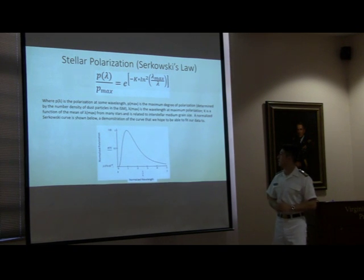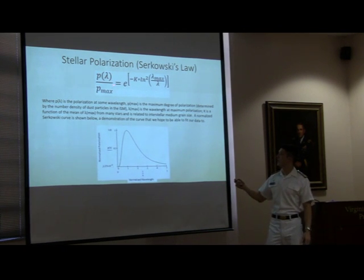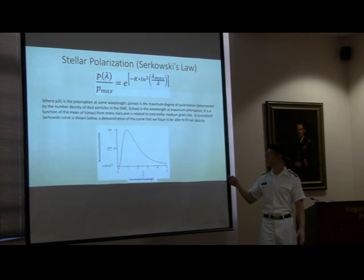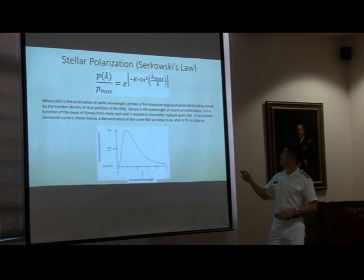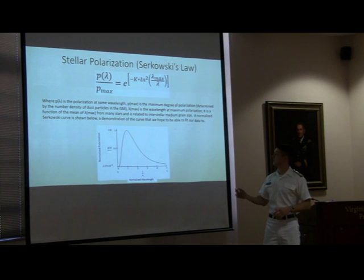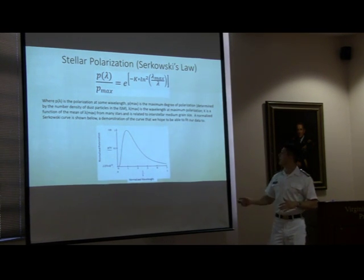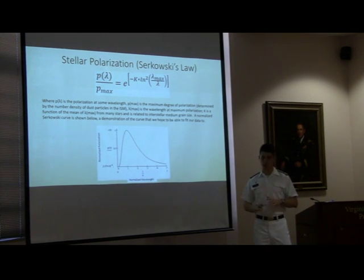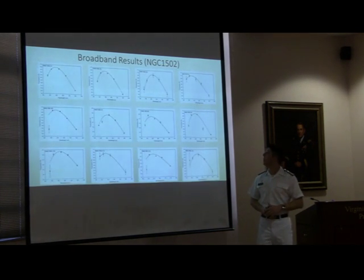Here's basically the bread and butter — the equation that we're working with. This is Serkowski's Law, where P is the polarization at some wavelength, P-max is the maximum degree of polarization, and lambda-max is the maximum wavelength at the maximum polarization. Here we have a demonstration of the normalized curve that we hope to fit to our data. We hope to get something that looks kind of like this.